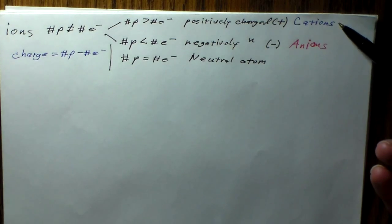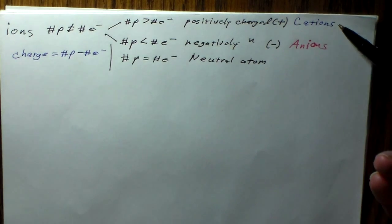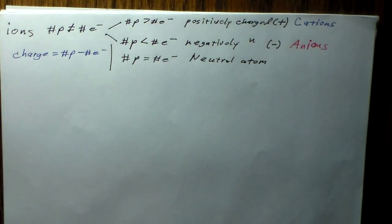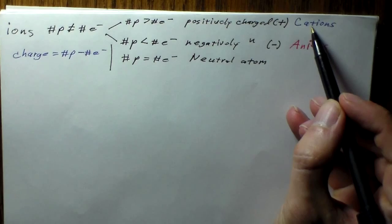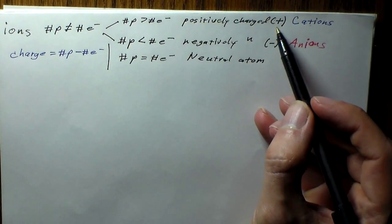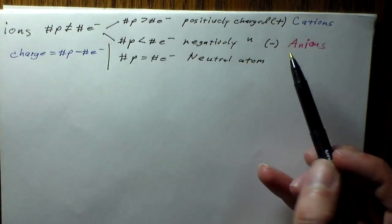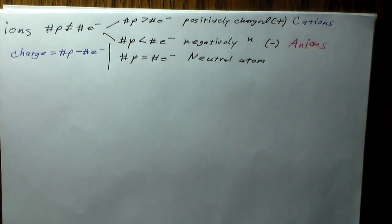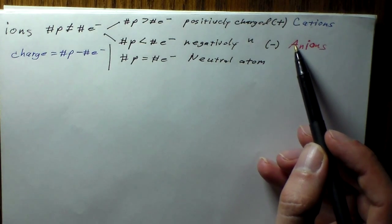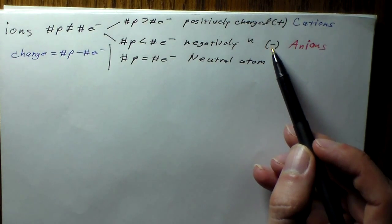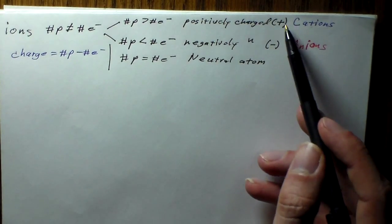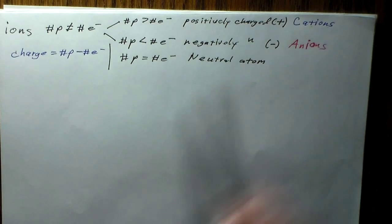As a way to help you remember the difference between a cation and an anion: notice the cation has the little 't', which looks a lot like a plus sign — that's how you remember the cation is positively charged. And then the anion has the little crossbar in the 'a', which looks like a negative sign, so the negative sign goes with the 'a' for anion.